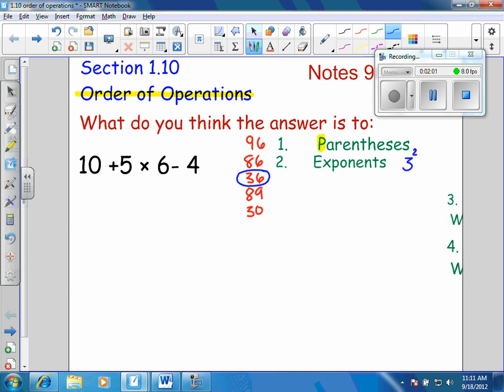But it's still part of the order of operations. So, in your notes, you want to write down step 1 to be parentheses. And then step 2, the E stands for exponents.